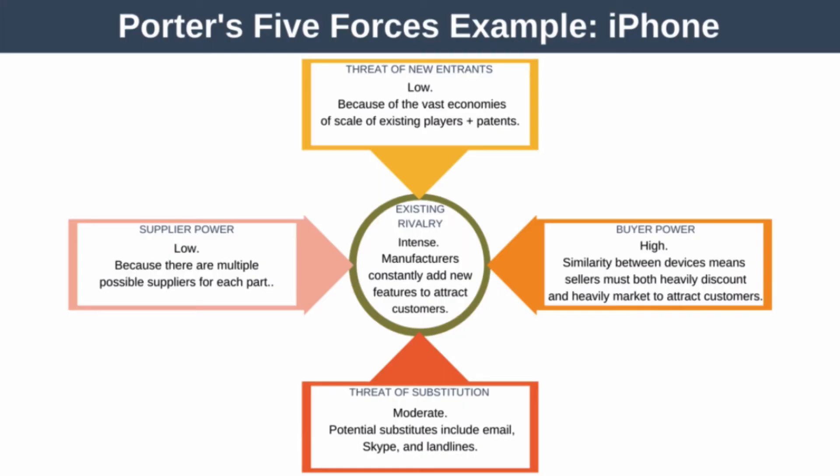To bring all this together, let's look at an example — the launch of Apple's original iPhone. In 2005, six companies dominated the cellular phone business, capturing about 90% of the global handset business. The largest was Nokia with almost a third of the worldwide market. Despite the market growing by 21% in 2005, if you were to analyze it using Porter's Five Forces, you might summarize the market as follows: existing rivalry between competitors is intense — manufacturers are constantly adding new features to attract customers, but overall products are somewhat similar.